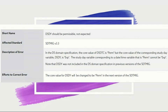I found some information online stating that DSDY should be 'permissible,' not 'expected' — this appears to be a bug in version 3.3. In the DS domain specification, the core variable DSSTDTC is permissible. But the corresponding study day variable DSDY is marked as expected. The study day variable corresponding to a permissible date and time variable cannot itself be expected.